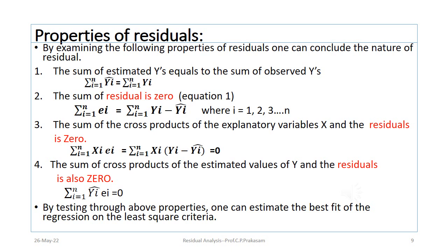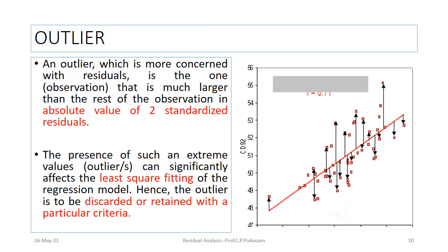How to find the residuals and what calculations are involved — by using SPSS we will try to understand. By identifying the outliers we can find out the residual pattern. An outlier is that observation which is much larger than the rest of the observations in the absolute value of the standardized residuals. The presence of such an extreme value can significantly affect the least squares fitting of the regression model. Hence, the outlier is to be discarded or retained based on a particular criteria.